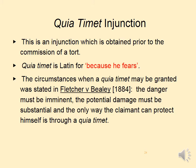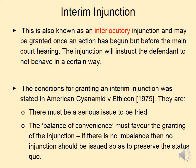This type of injunction is Latin for 'because he fears' (quia timet). As seen in Fletcher v Bealey, the danger must be imminent, the potential damage must be substantial, and the only way that the claimant can be protected is through this particular type of injunction. Interim injunctions, also known as interlocutory injunctions, may be granted once an action has begun but before the main court hearing. As seen in the American Cyanamid case, there must be a serious issue to be tried, the balance of convenience must favour granting the injunction, and if there's no imbalance, then no injunction should be issued.